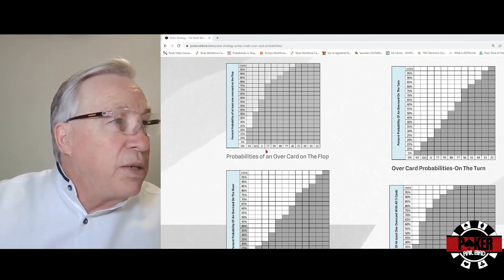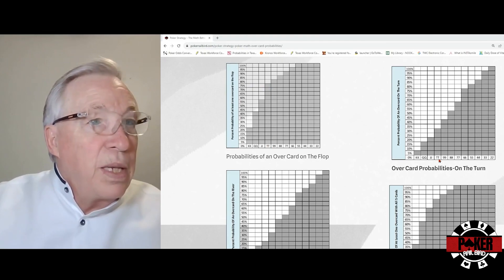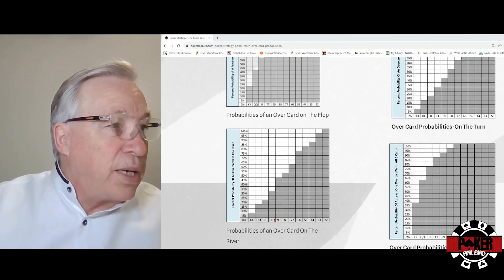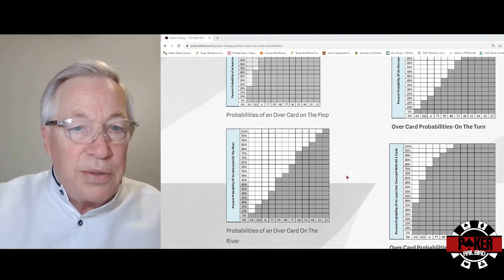Those pocket tens - on the flop we're a 75 percent chance that an overcard will come. On the turn we're a 30 percent chance, and once again on the river we're a 30 percent chance as well.